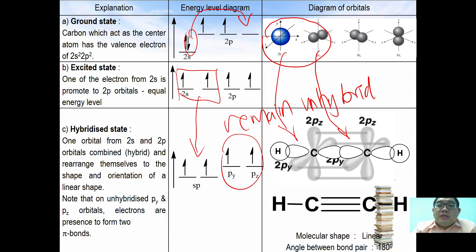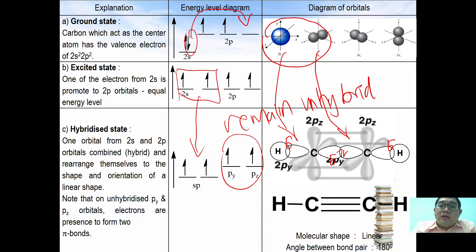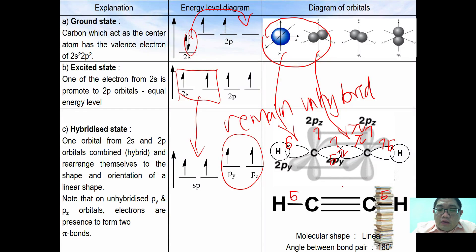The unhybridized orbitals retain their shape. The sp hybrid orbitals of the two carbons directly overlap to form a sigma bond, and the other hybrid orbital overlaps with a hydrogen atom to form another sigma bond. The unhybridized py and pz orbitals, each containing one electron, form side-touch bonds. Since there are two unhybridized orbitals, two pi bonds are formed. In the Lewis structure, there are four sigma bonds and two pi bonds. The shape is linear with a bond angle of 180 degrees.